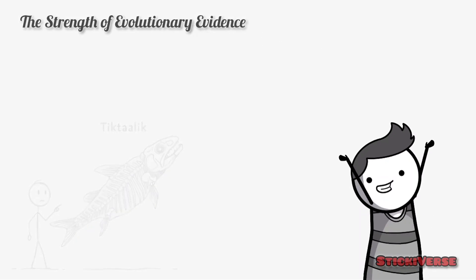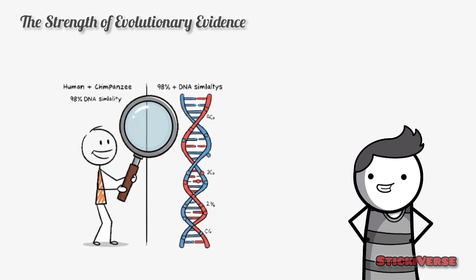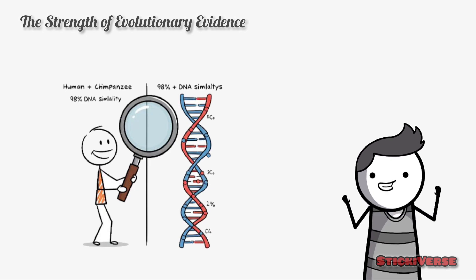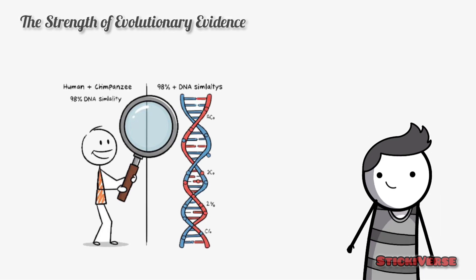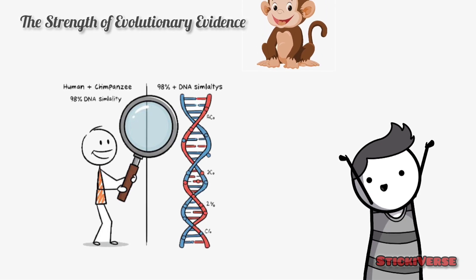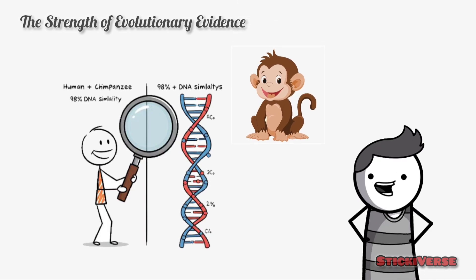Second, genetic evidence. When we compare the DNA of different species, we find striking similarities indicating common ancestry. For instance, humans share around 98% of their DNA with chimpanzees, showing how closely related we are.